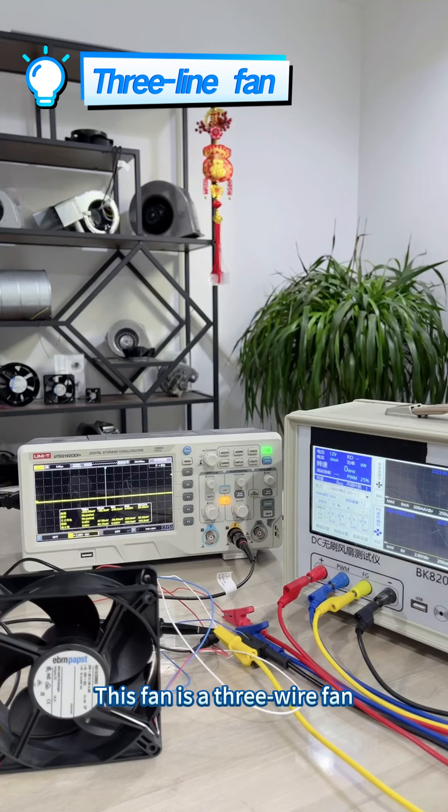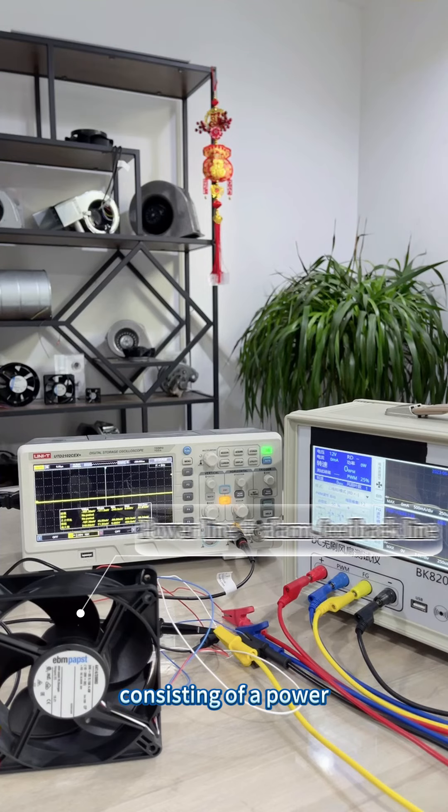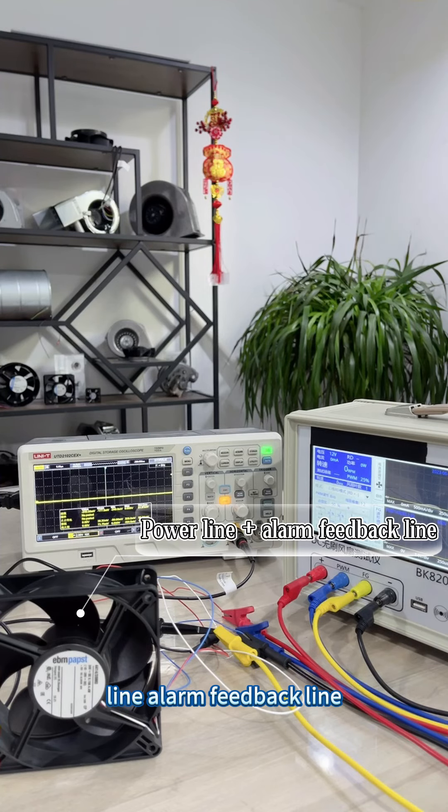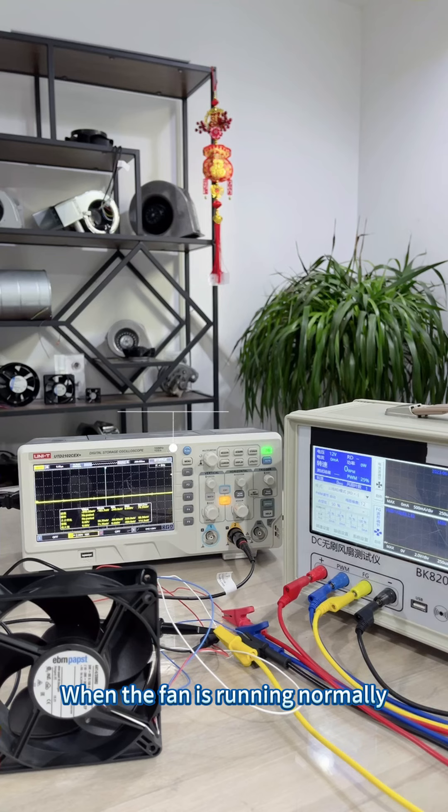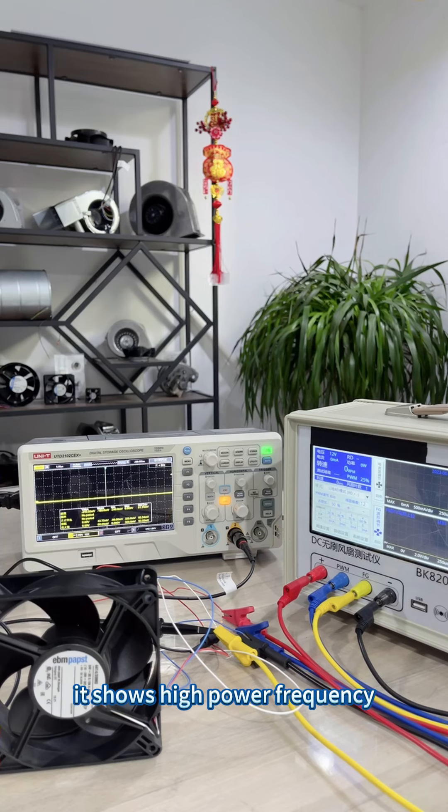This fan is a three wire fan consisting of a power line and alarm feedback line. When the fan is running normally, it shows low power frequency. When the fan is blocked, it shows high power frequency. Demonstration as follows.